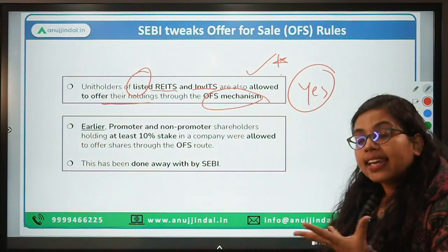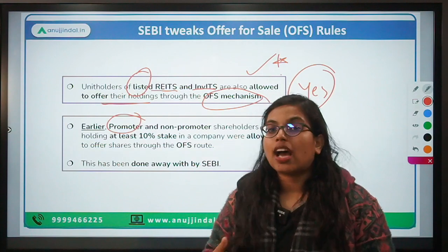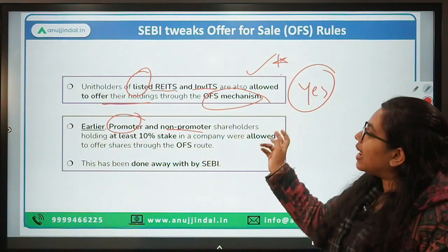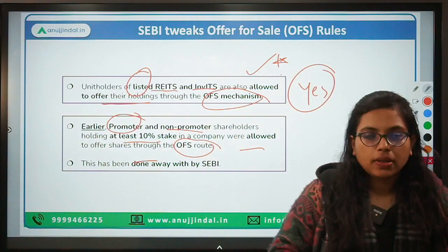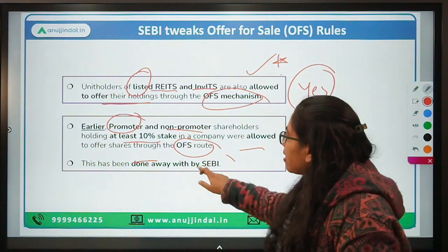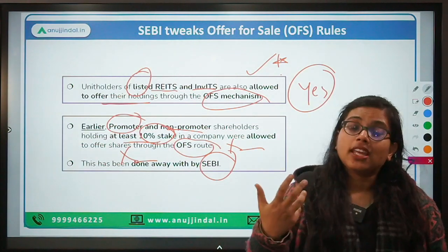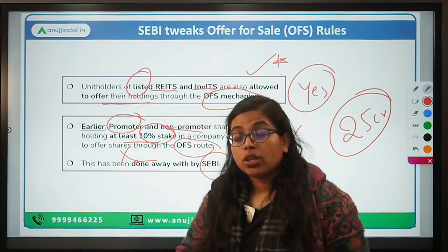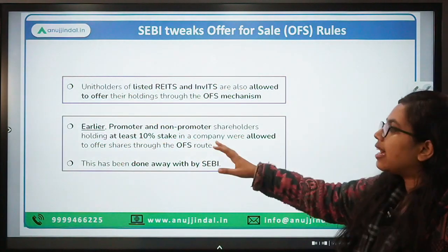Earlier, only promoters were allowed to use offer for sale. But now, even large non-promoter shareholders are allowed to do so. Previously, non-promoter shareholders were allowed to sell shares through the OFS route only if they had at least 10% stake in the company. But recently SEBI has done away with this — the 10% criteria has been removed. Now any investor, shareholder, or promoter group, irrespective of stake, provided they have 25 crores to issue under the OFS, can use the OFS route.